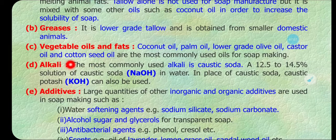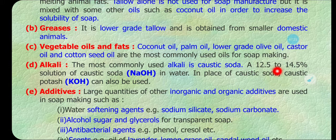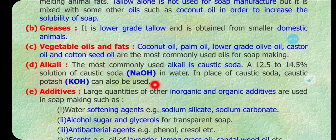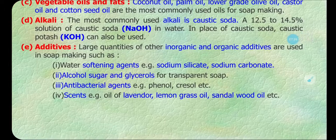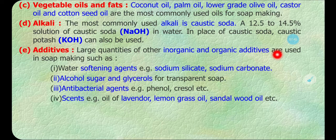The second important chemical is alkali. The most commonly used alkalis are caustic soda and potash soda for the manufacture of soap. A 12.5 to 14.5 percent solution of caustic soda is used. Potash is also used for the hydrolysis of fats. Several other additives are also needed to manufacture soap and develop a variety of soaps — large quantities of inorganic and organic additives are used.